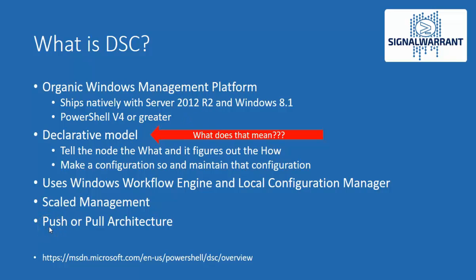DSC uses the workflow engine, and on the target nodes the Local Configuration Manager is the engine that runs in the background that actually makes the magic happen. It's very good for scale management. You can do it a couple of different ways — push or pull architecture. I'm going to talk about push tonight because it's the easiest and doesn't require another server. Pull architecture, which I'll probably cover in another video, requires you to stand up a server with the DSC feature installed. There's a link on MSDN if you want more information.